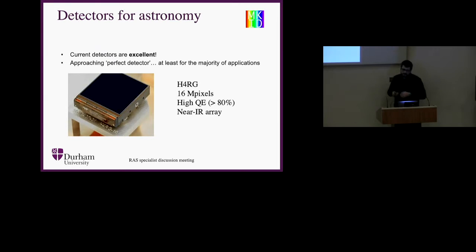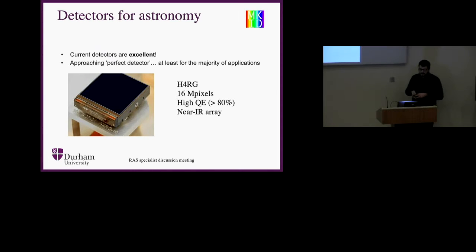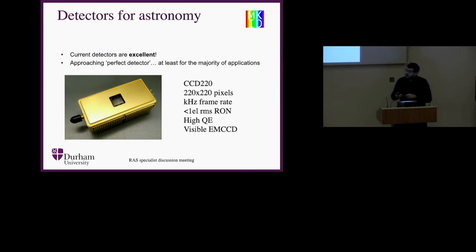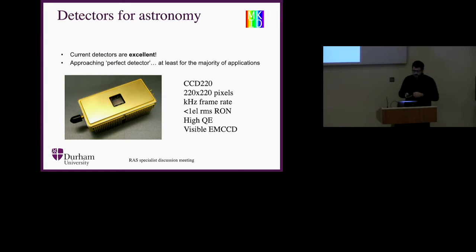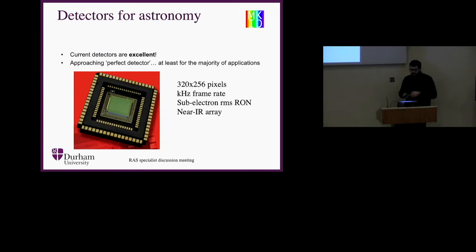Consider the Hawaii 4RG: 16 million pixels, all with very high QE, a near-infrared array with very good cosmetic quality. It works over a reasonable passband all the way through the infrared and is pushing down toward the visible — but it's not cheap. The CCD220, designed for wavefront sensing, is a smaller array — not the large megapixel type — but runs at kilohertz frame rates. It has low noise but non-zero, a very high QE, and is basically a visible EMCCD.